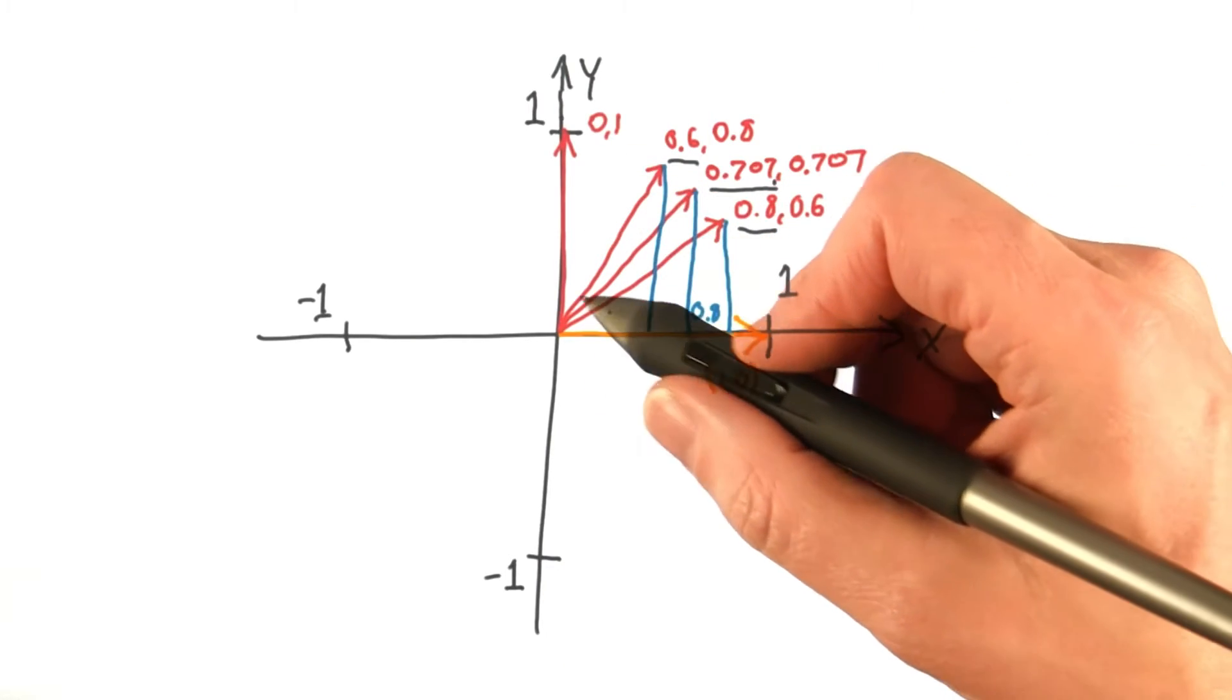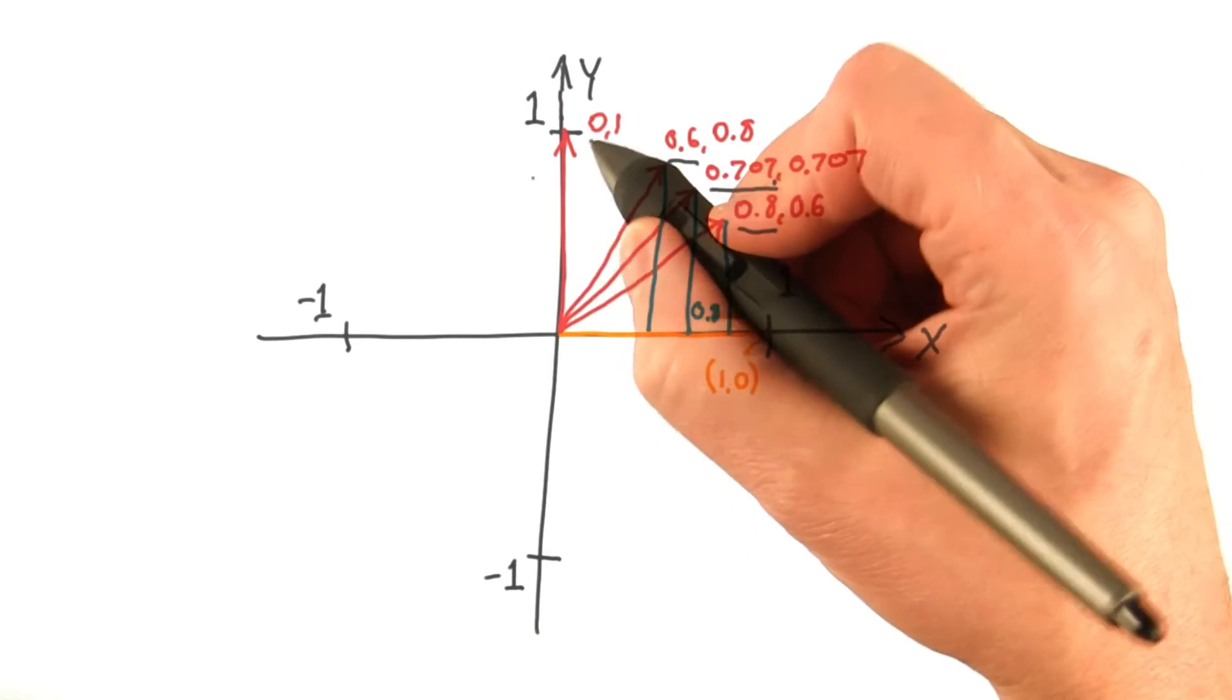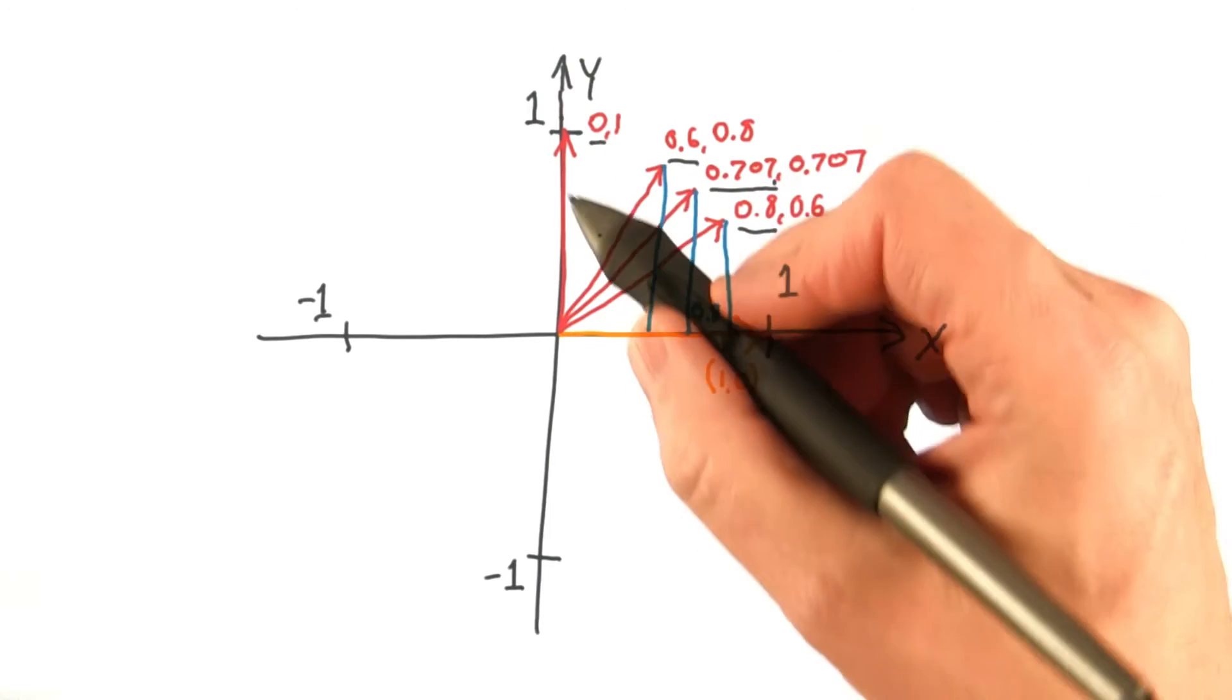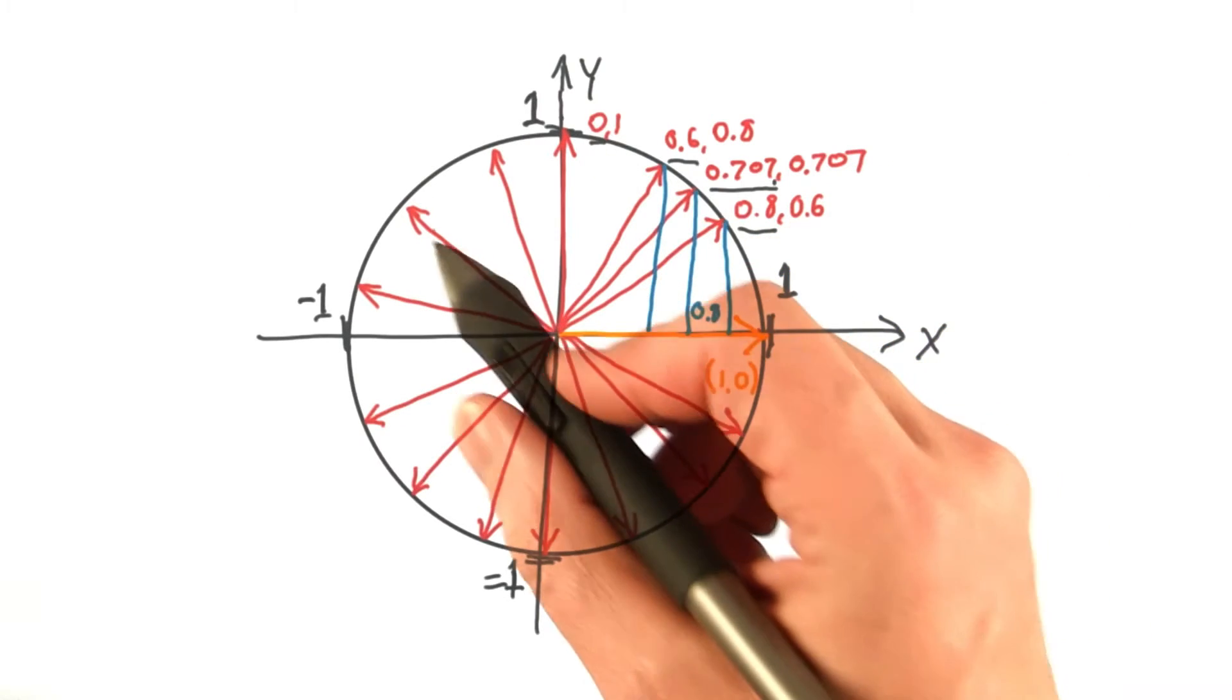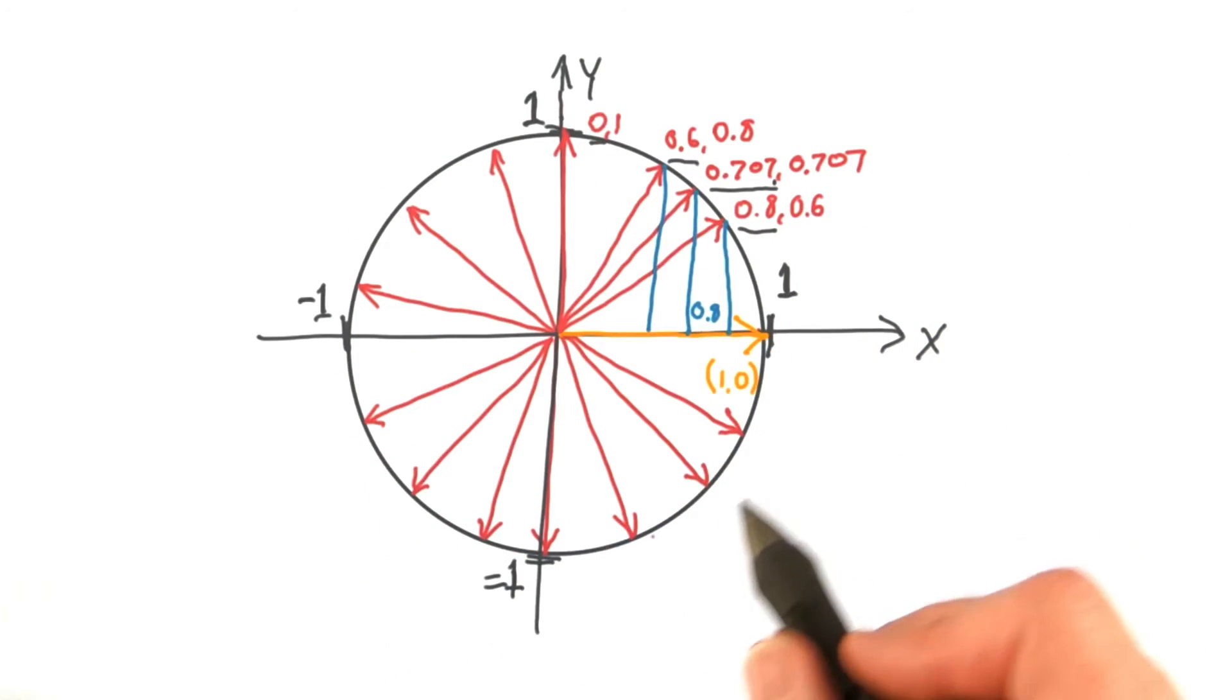Continuing on with the vector 0, 1, the dot product between this vector and this vector is 0. Vectors at right angles to each other always have a dot product of 0. If you work your way around with more vectors, you'll form a circle.